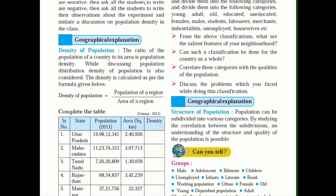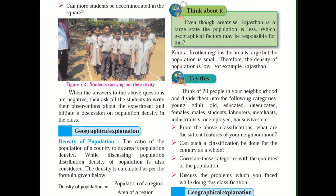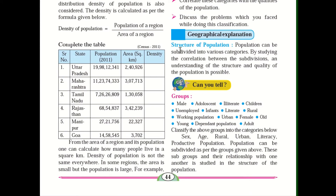Now come to your right hand side — that is the structure of population. What does structure of population mean? It means the composition of a population, showing how the population is divided between males and females of different age groups. That is called the structure of population. Population can be subdivided into various categories, and by studying the correlation between the subdivisions, an understanding of the structure and quality of the population is possible.